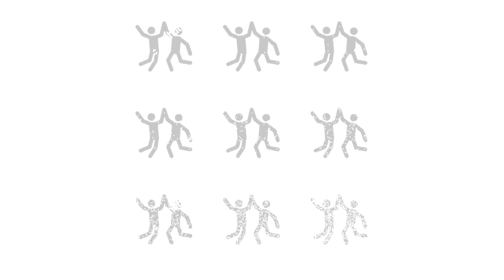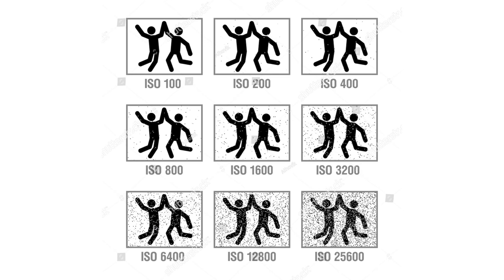The last part of the exposure triangle is your ISO. I put it last because you should be dealing with your shutter speed and aperture before you try to crank up your ISO. ISO is your sensitivity to light — the higher you go, the more you're adding artificial noise and reducing quality in your shot. ISO needs to be the last thing you touch.